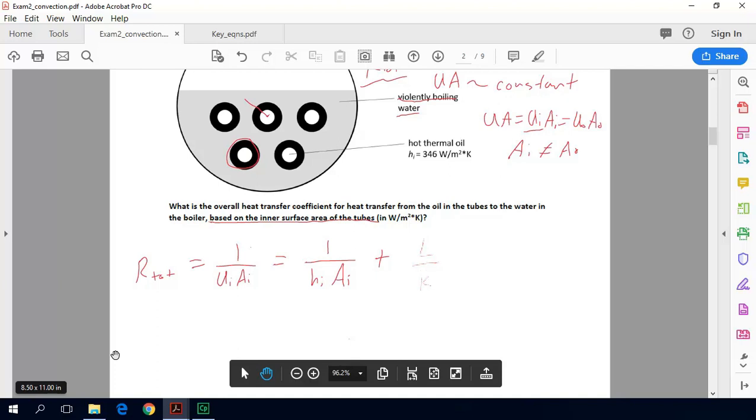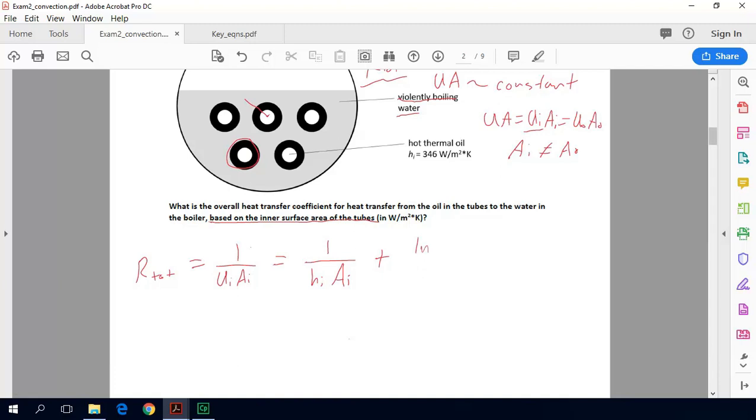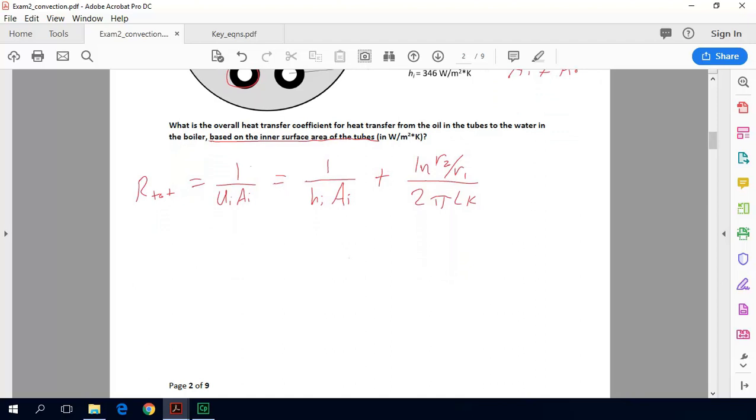This was wrong. We need to use this: natural log of r_2 over r_1 divided by 2π L k. So that's our total thermal resistance. Then we want to get U_i times A_i, which equals the inverse of this whole thing. This is going to be 1 over h_i. I'm going to skip a step and plug in what our inner tube surface area is. The inside perimeter is 2π r_i times the length. So that gives us our convective thermal resistance and our conductive thermal resistance.